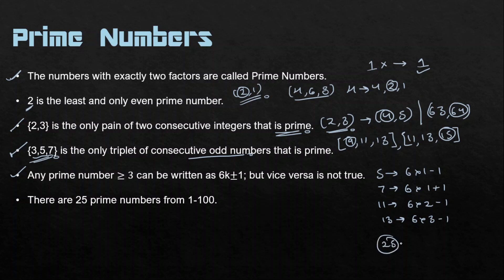For example, 25 = 6×4 + 1, which is of the form 6K + 1, but 25 is not prime. So all prime numbers greater than 3 can be written as 6K ± 1, but not every 6K ± 1 number is prime — vice versa is not true.